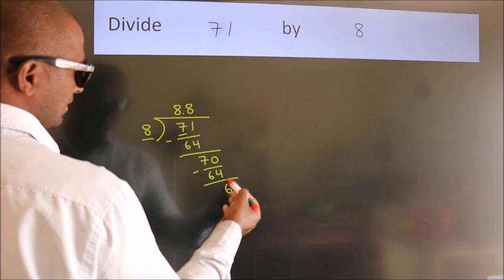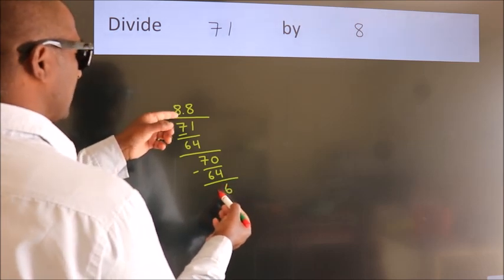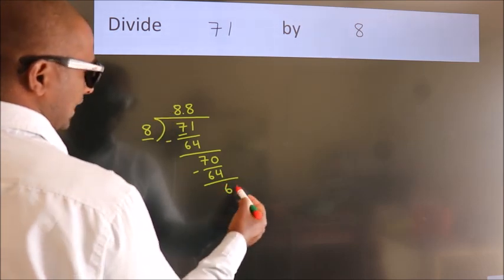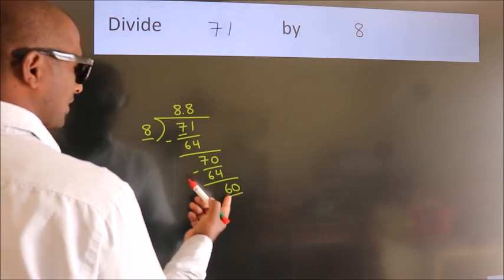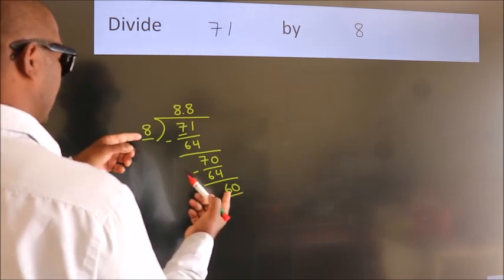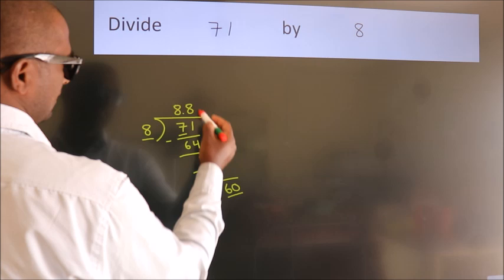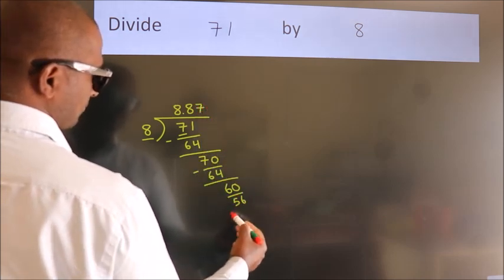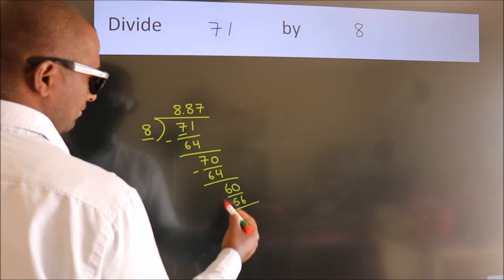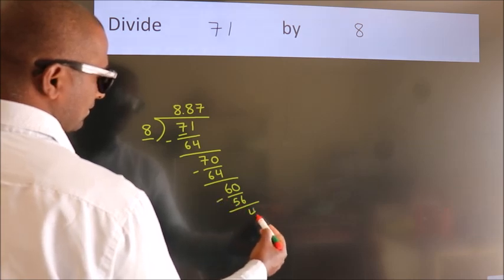After this, we already have the decimal, so directly take 0. So 60. A number close to 60 in the 8 table is 8 times 7, 56. Now we subtract. We get 4.